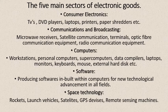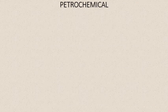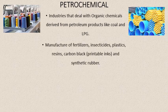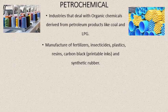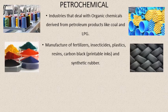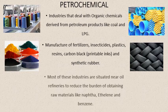Finally, the petrochemical industry. From the term we can understand it deals with industries using organic chemicals derived from petroleum products like coal and LPG. The most common petrochemical product that we use every day — and are trying to reduce but it's still increasing — is plastics. Plastics are petrochemical products formed as a chemical derivative of petroleum products.